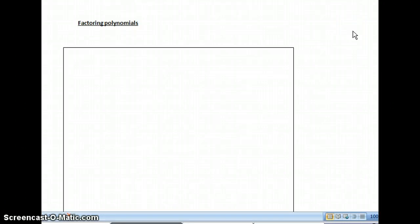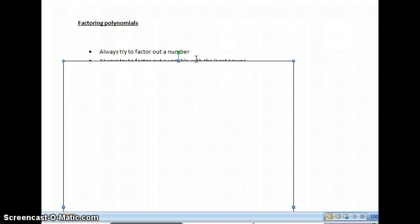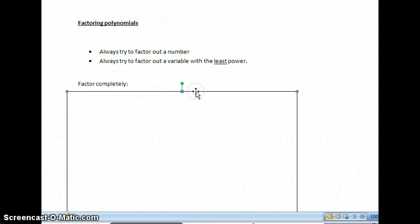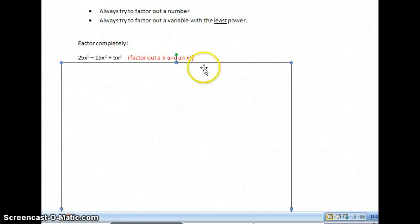Hello everybody, this is Mr. Ardelli. Today I'm going to be talking to you about factoring polynomials. The first rule when you factor a polynomial is you should always try to factor out a number, which is the coefficient, and always try to factor out a variable with the least power. Sometimes you won't be able to do one or the other of that, but if we have an example such as this.